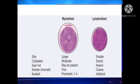The myeloblast has a moderate amount of cytoplasm compared to the lymphoblast, which has very scant cytoplasm. Auer rods are seen in the cytoplasm of myeloblast. Auer rods are rod-shaped pink granules in the cytoplasm — that's why they are called Auer rods. Auer rods are characteristic for myeloid origin, so they are absent in lymphoblast.